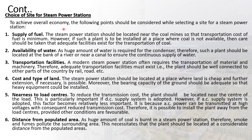The supply of fuel: the plant should be located near the coal mines so that the transportation cost of fuel is minimum. If the plant needs to be installed where coal is not available, adequate transportation must be arranged. The availability of water is required: as a huge amount of water is required for the condenser, the plant should be located at the bank of a river or near a canal to ensure a continuous supply of water.